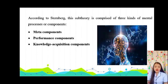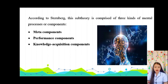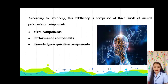First is meta-components, which enable us to monitor, control, and evaluate our mental processing so that we can make decisions, solve problems, and create plans. Next is performance components, which enable us to take action on the plans and decisions arrived at by the meta-components. Then, knowledge acquisition components enable us to learn new information that will help us carry out our plans.